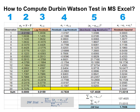In step 5, take the square of subtracting lag residuals from residuals. In the last step 6, square the residuals given in step 2. After that, take the sum of column 5 and column 6.